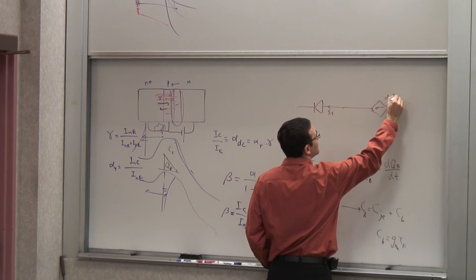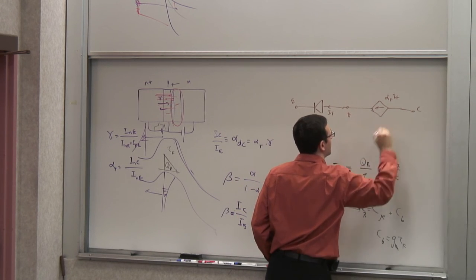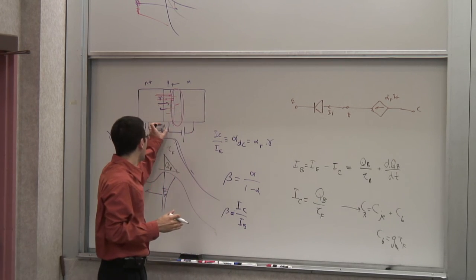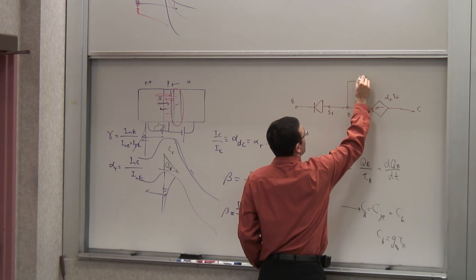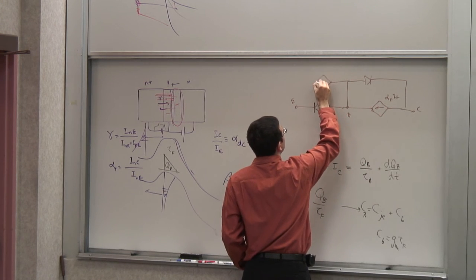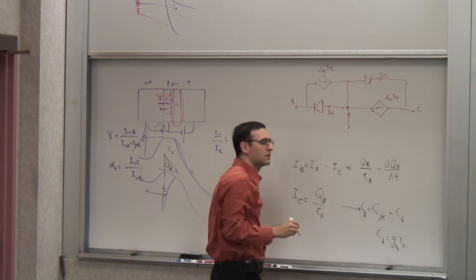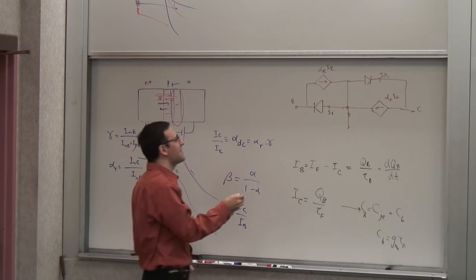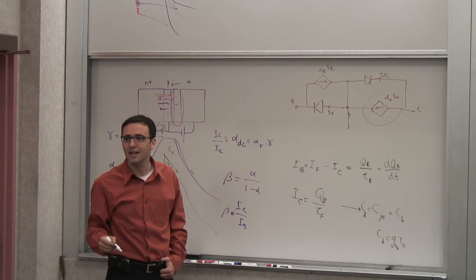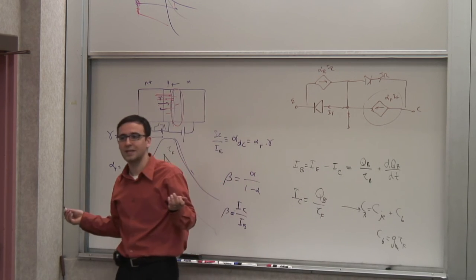That was the bipolar transistor. How do we model it? From a large-signal perspective, I can model this NPN bipolar transistor as a diode and a current source controlled by the current through that diode. If this current is IF, then the controlled source is alpha_F·IF. Now, in general, we have two of these — a forward transistor and a reverse transistor. That can be modeled by another diode and another current source, alpha_R·IR. This is what we call the Ebers-Moll model. A transistor is something more than just two back-to-back diodes — this current source is the useful part; everything else is parasitic.